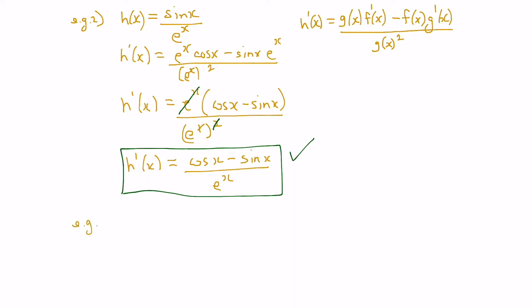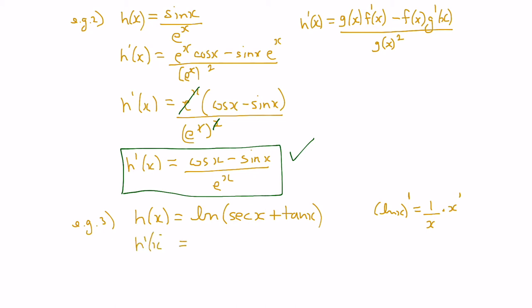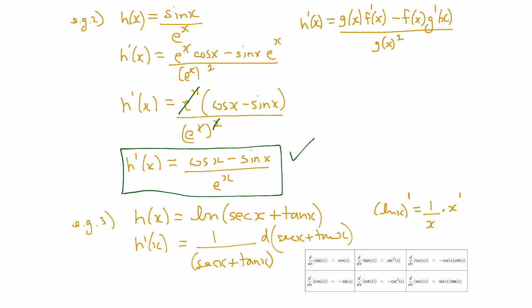Let's look at one more example. We have h of x equal to the natural logarithm of secant x plus tan x. Recalling that the derivative of ln x is 1 over x times the derivative of x, h prime of x becomes 1 over (secant x plus tan x), times the derivative of secant x plus tan x. From the table, the derivative of secant x is secant x tan x, and the derivative of tan x is secant squared x.